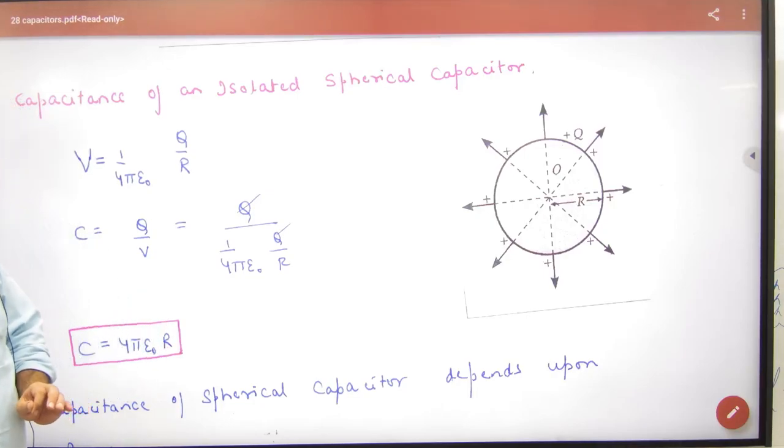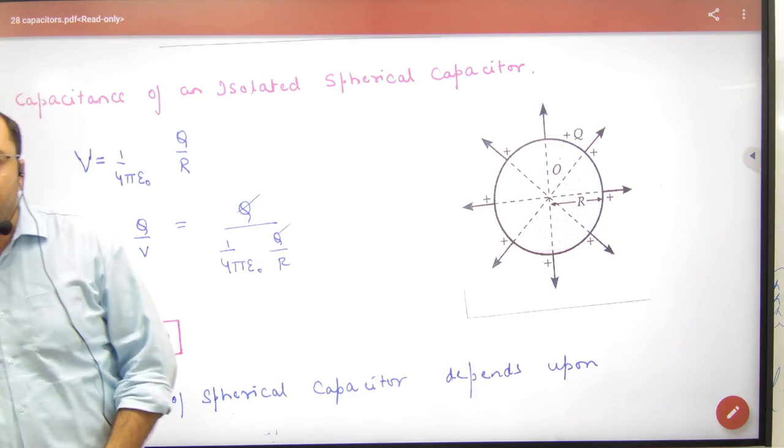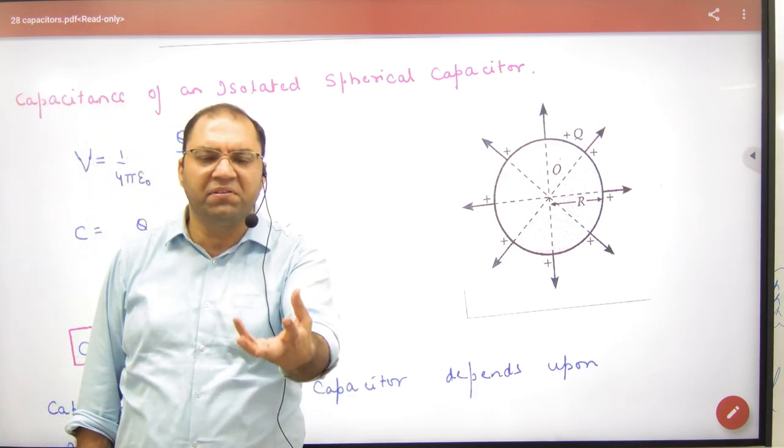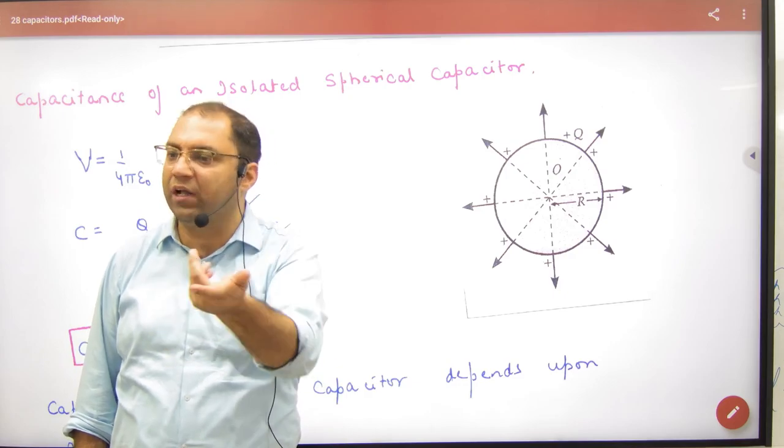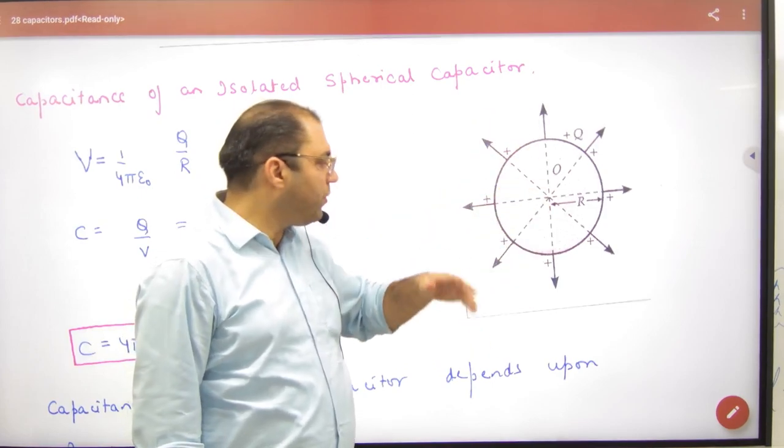Capacitance of an Isolated Spherical Capacitor. An isolated spherical capacitor is just a sphere, a conducting sphere. Its radius is r and the charge is q.